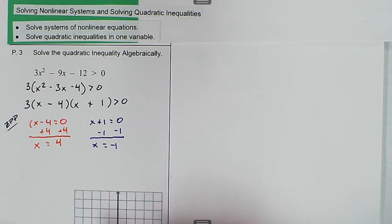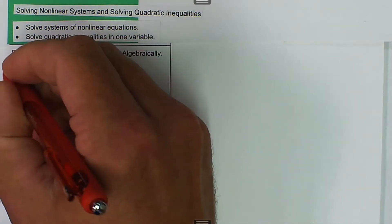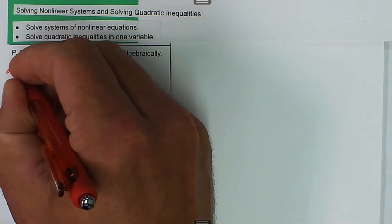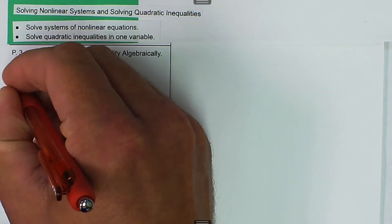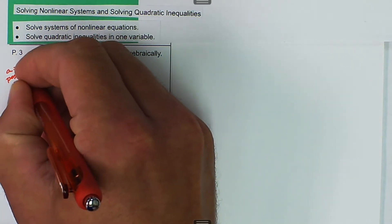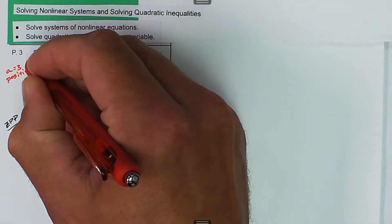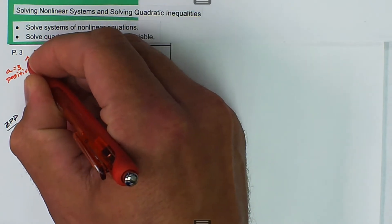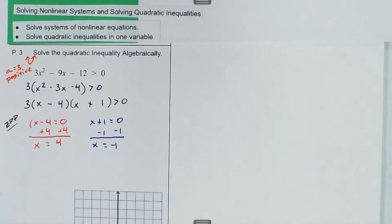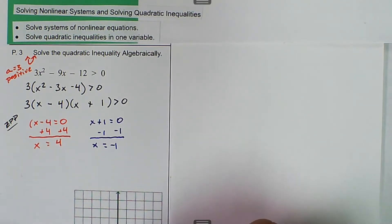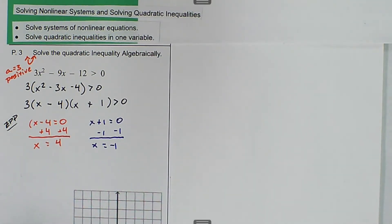And then we want to look and see our a value is equal to 3. So that's positive. So that means our parabola is going to open like this. And so we know that it's going to open that way. And at this point, we don't really care where our vertex is exactly.